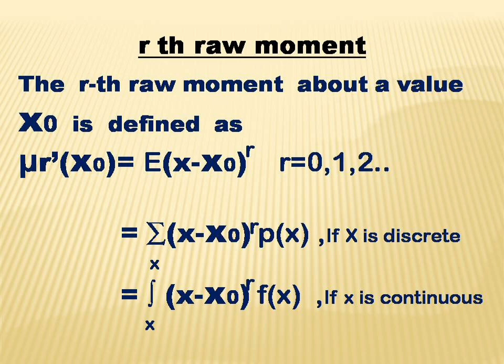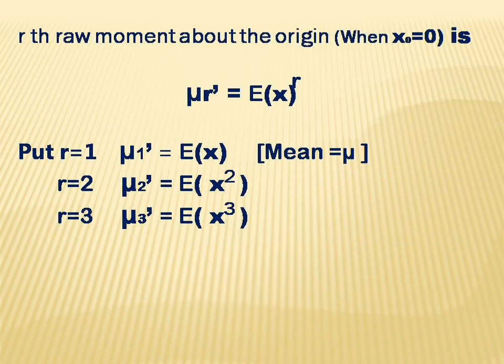For a discrete distribution, this is written as the summation over x of (x minus x₀) raised to r, times p of x. A special case is when x₀ is equal to 0.